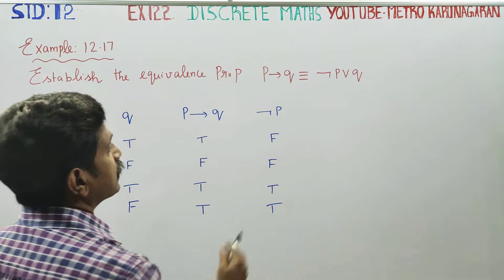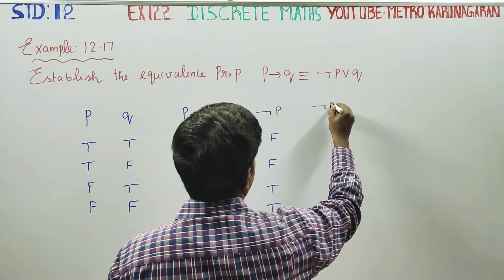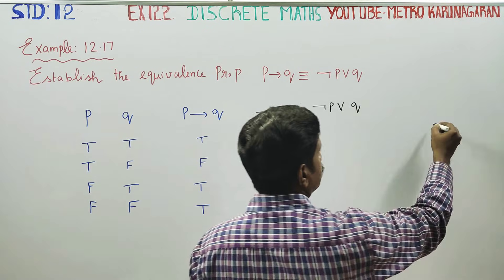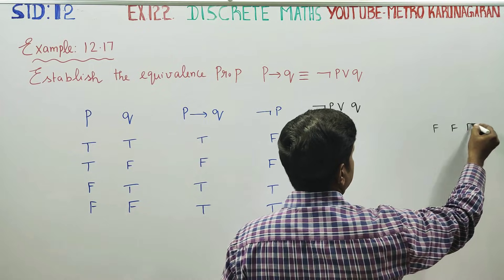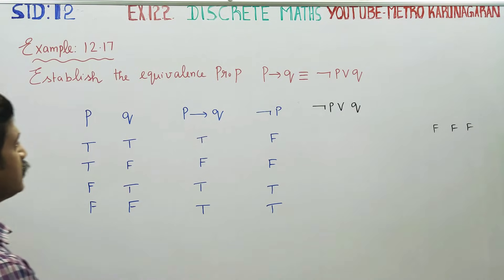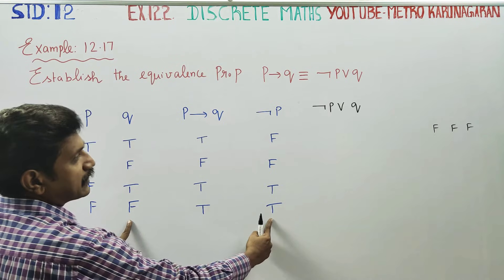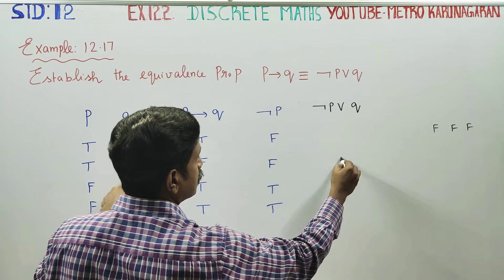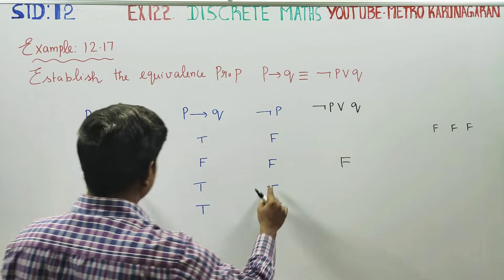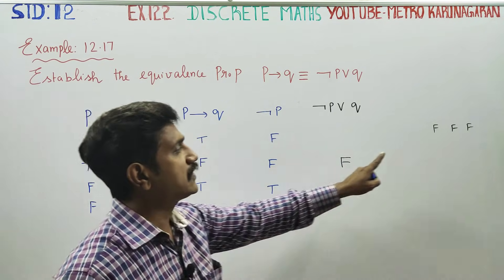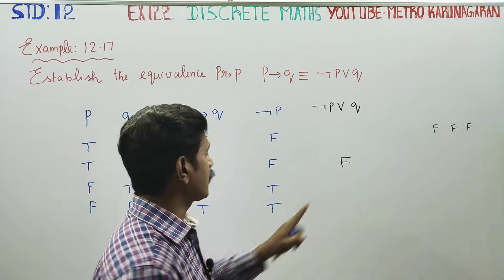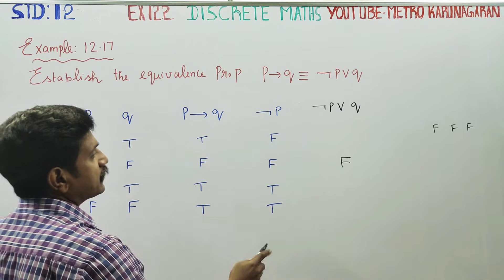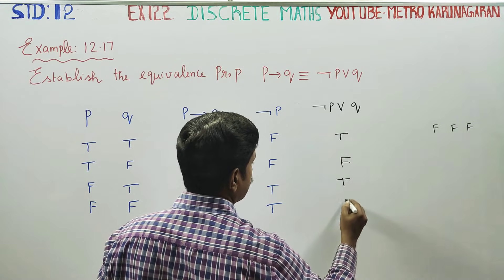The last column is negation P or Q. The values will be F, F, F, F — they all start with F, F, F, F.